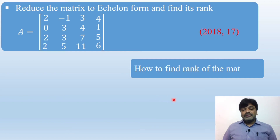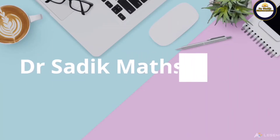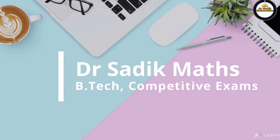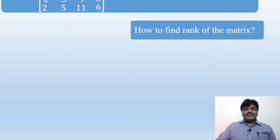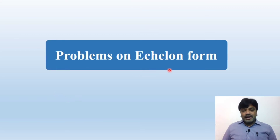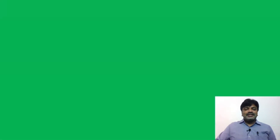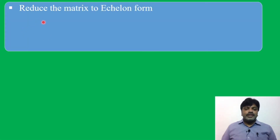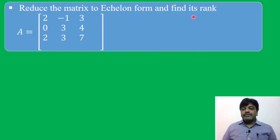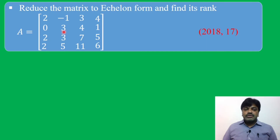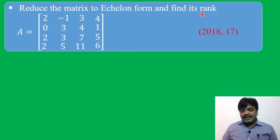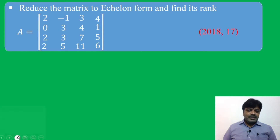Today we discuss problems on echelon form. Let us see the problem: reduce the matrix to echelon form and find its rank — same matrix A. We are finding the echelon form and then the rank. This is a 2018 question, friends, very very important. Let us see the solution.